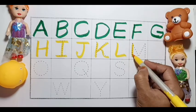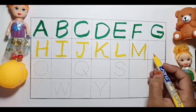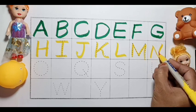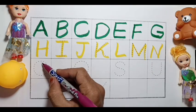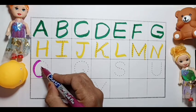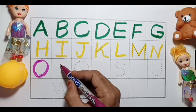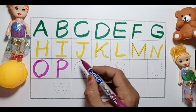M for Monkey, N for Nose. Purple color. O for Orange, P for Peacock.